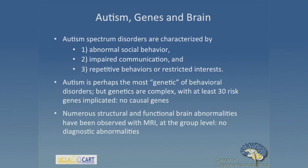I'm a brain imager, so I'm interested in functional and structural brain imaging. Numerous structural and functional brain abnormalities have been reported in autism, mostly at the group level. Very little has been done at the individual subject level that would allow us to do something diagnostic. But we can learn a lot about mechanism by studying the brain. Today I'm going to be focusing on how we can use imaging genetics to link genes, behavior, and brain in a way that helps us understand more about the pathology and developmental trajectory of the disorder.